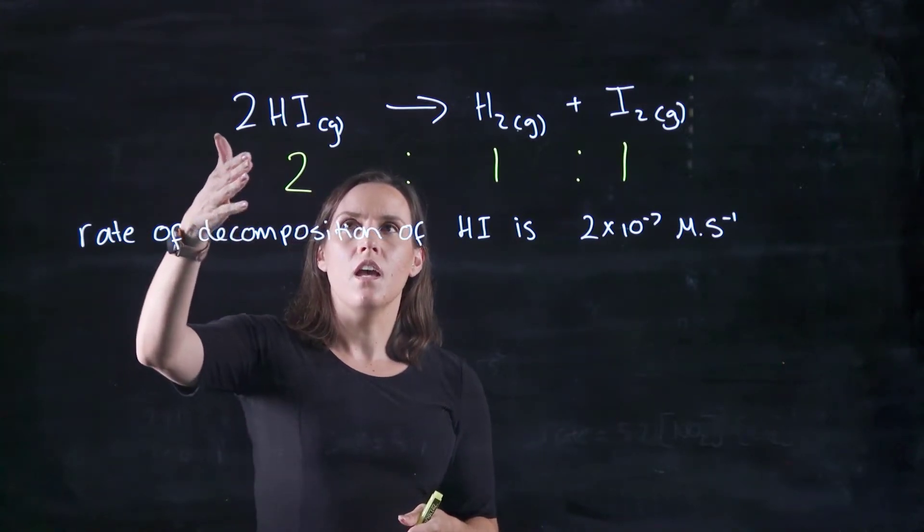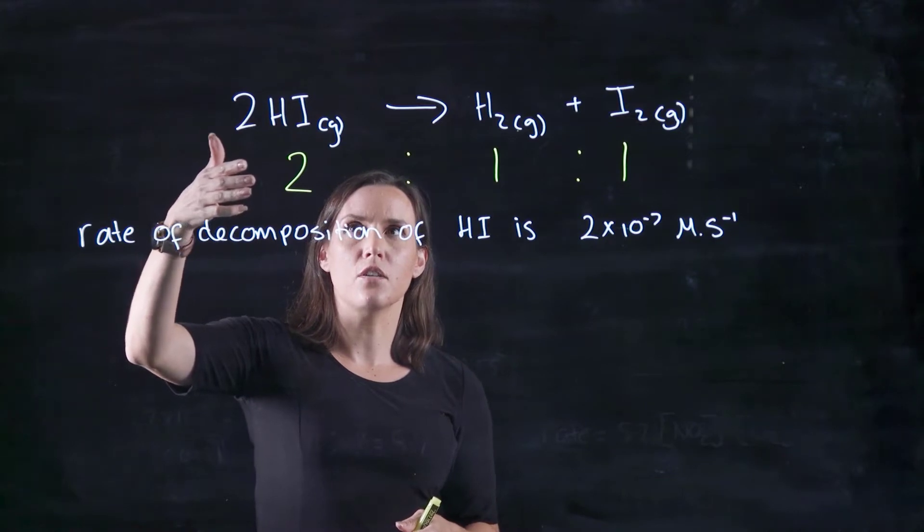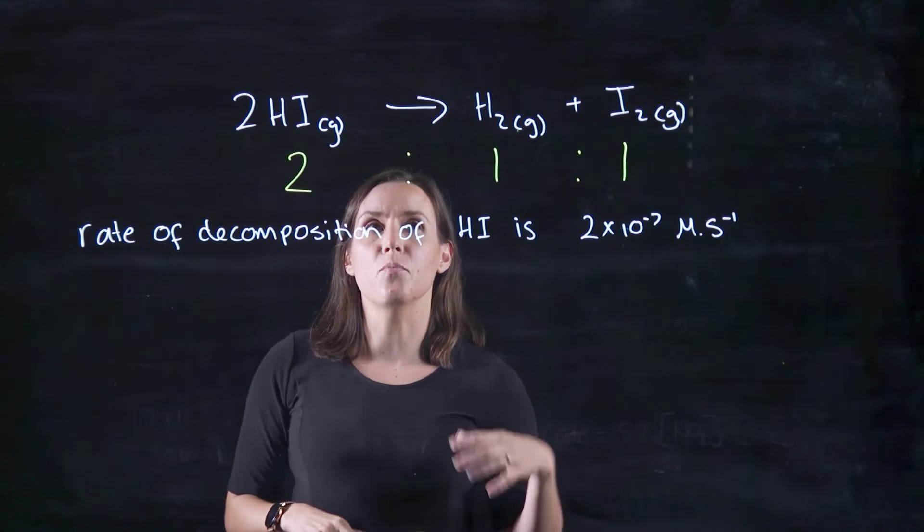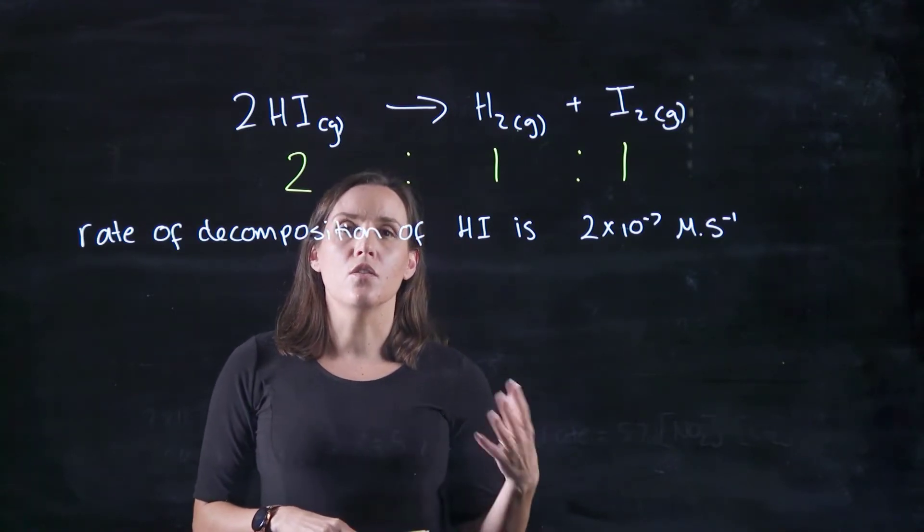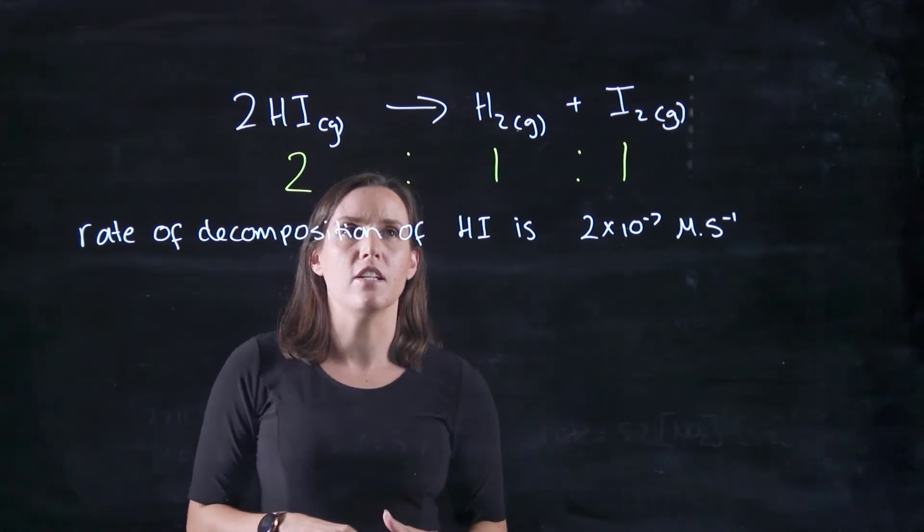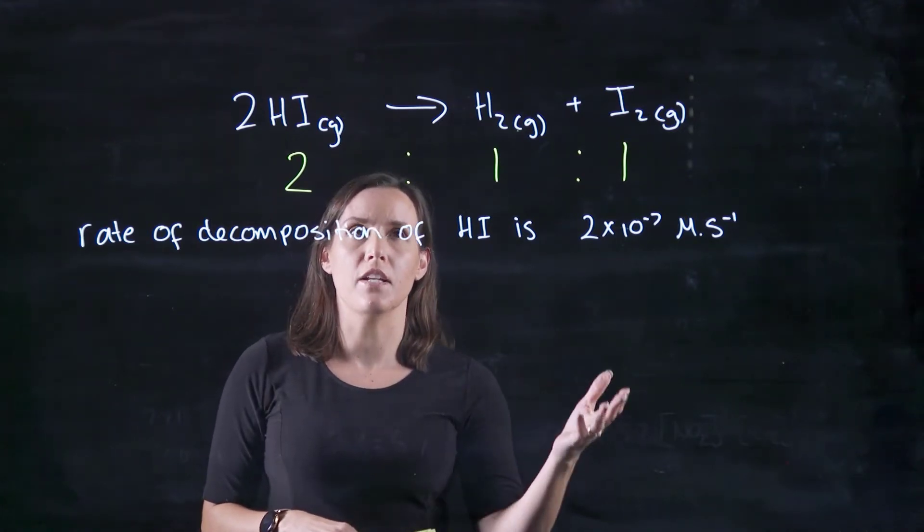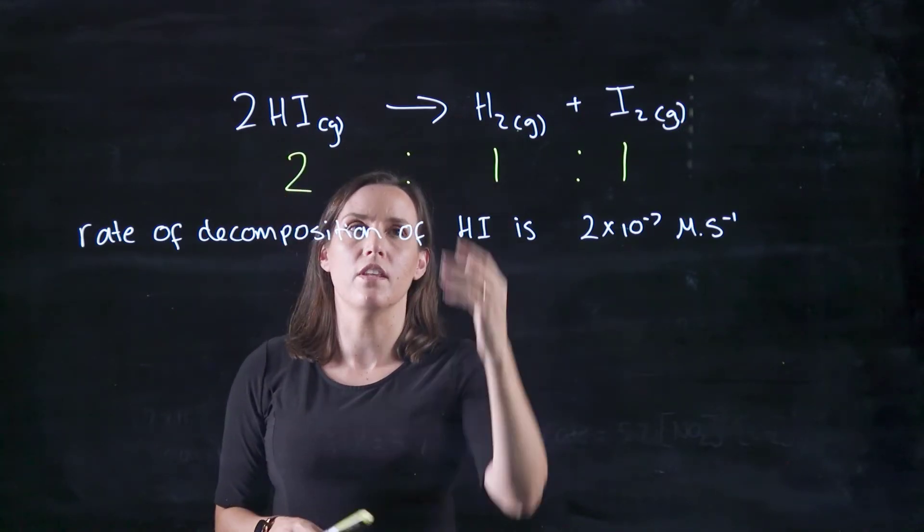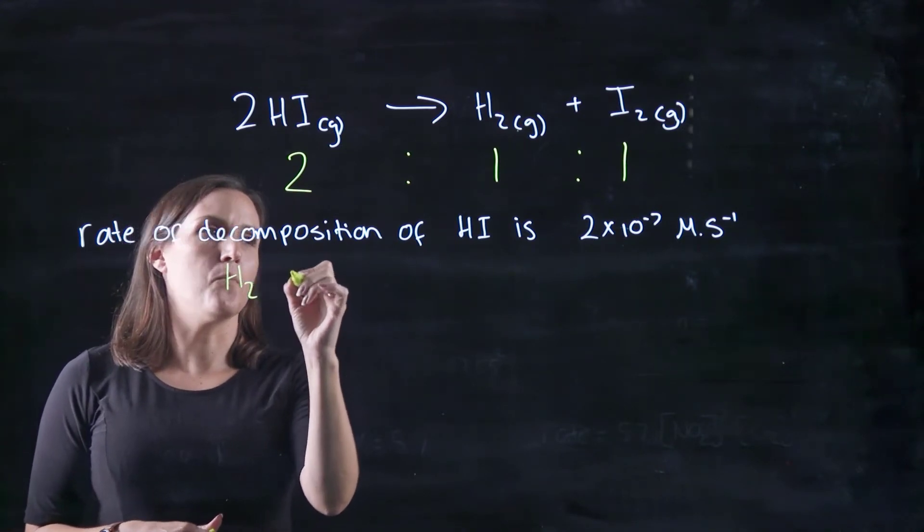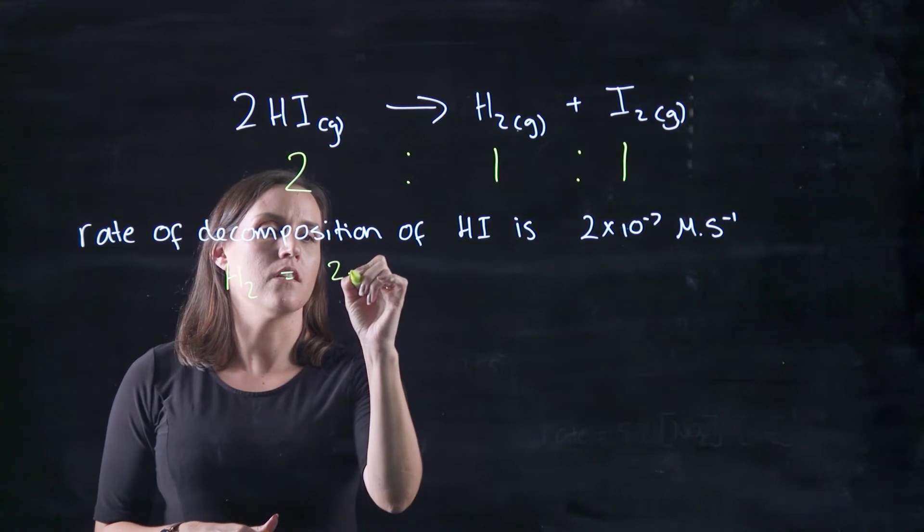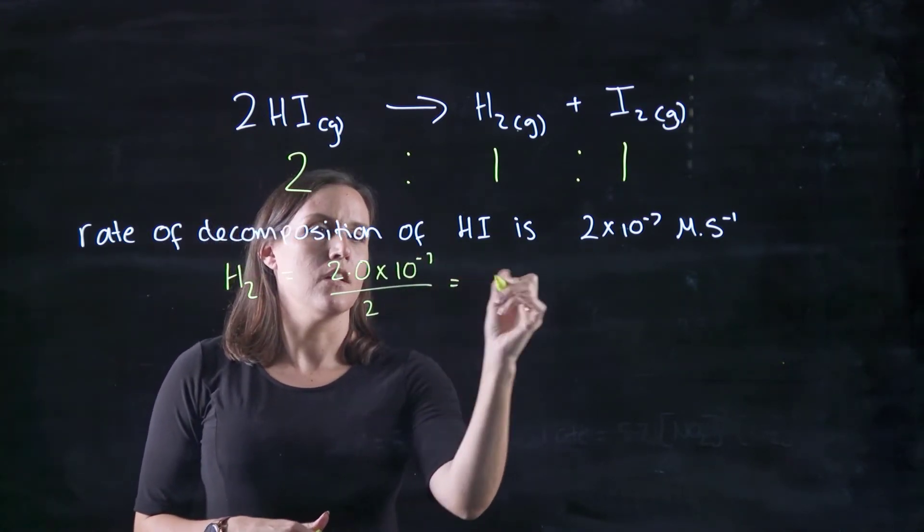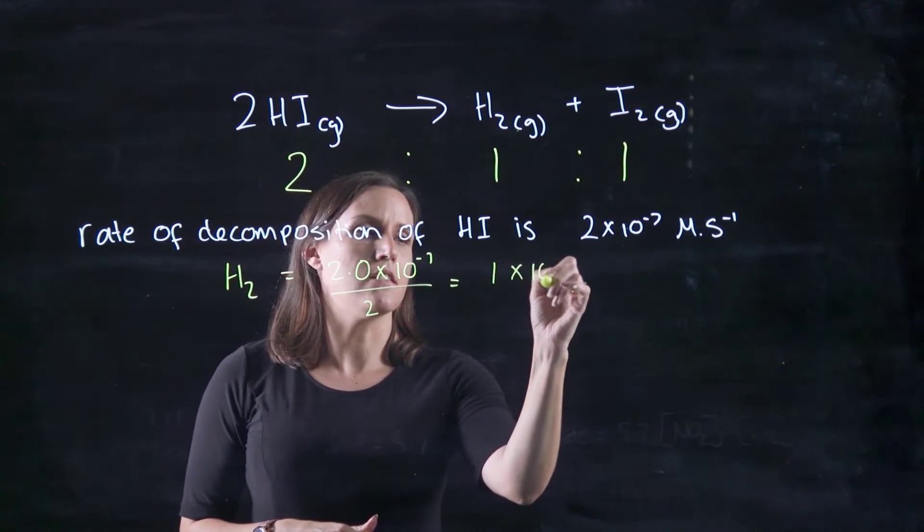So looking at the reaction, we know that 2HI is decomposing to produce 1H2. So the rate of appearance of H2 would be half the speed of the decomposition of HI, so we divide it by 2, because we've got 2 of these producing one of these. So H2 would be 2.0 times 10 to the minus 7 divided by 2, so it would be 1 times 10 to the minus 7.